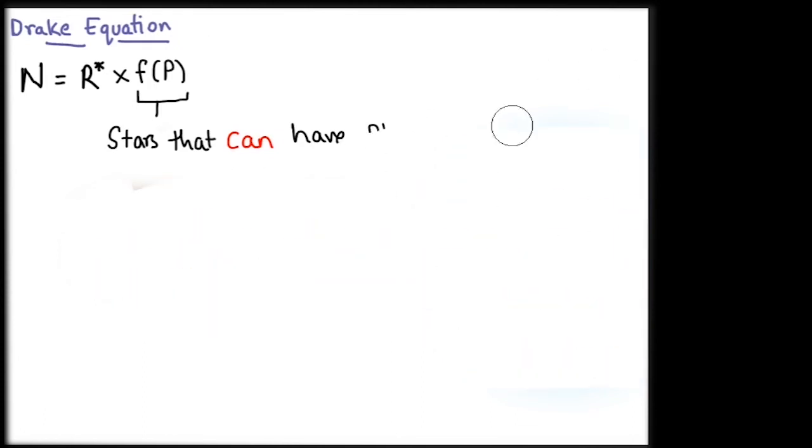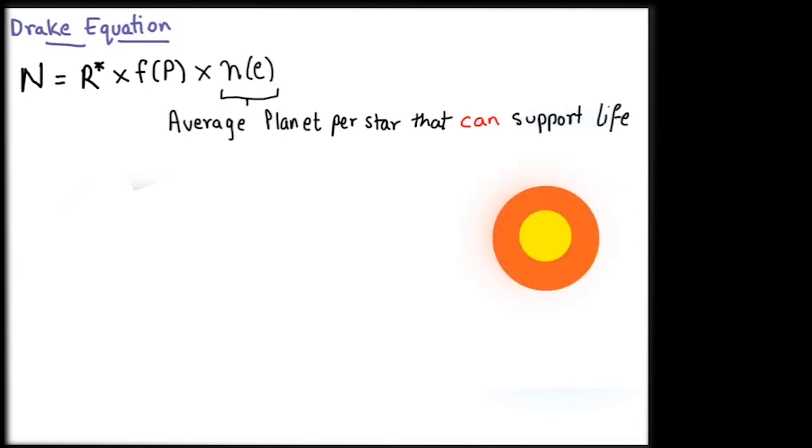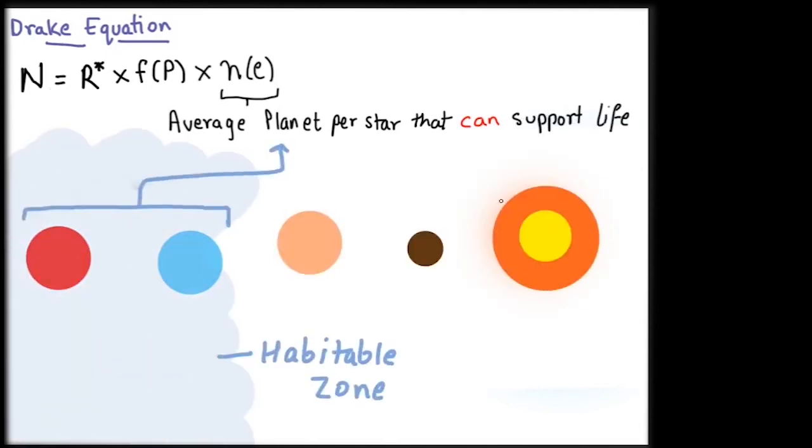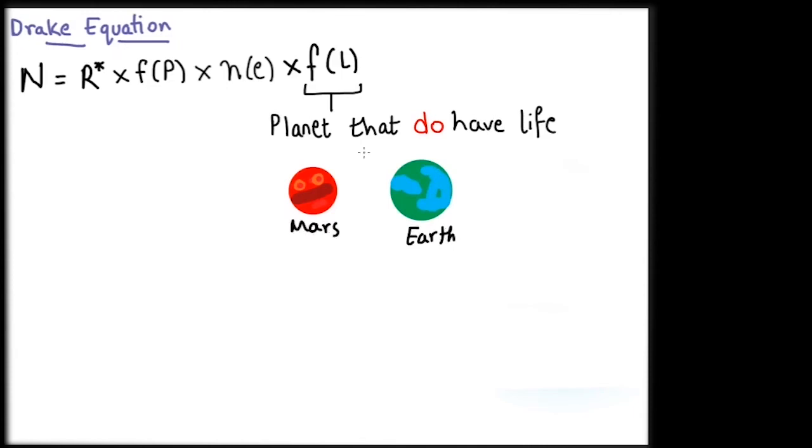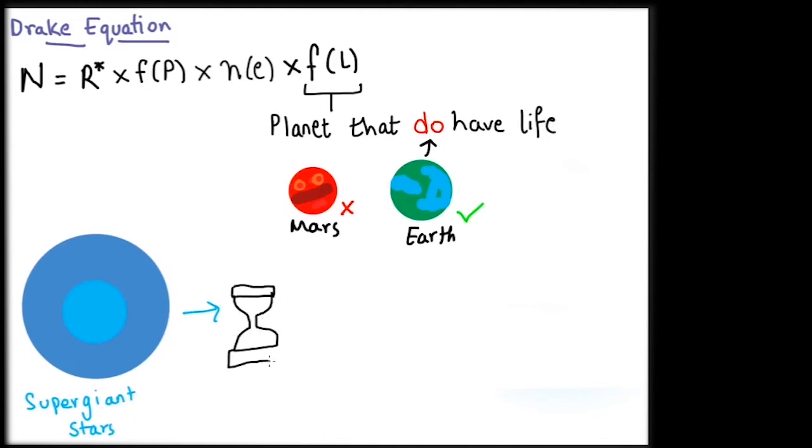Then the third term is N of E, which is the average number of these planets per star that can support life. This will depend a lot on the conditions I have discussed above. The fourth term is F of L, the fraction of life supporting planets that will actually develop life. Like Mars, a planet that is in the right place to support life may still fail to do so. Plus supergiant stars with short lifetimes usually do not live long enough in the same stage before any life could arise.